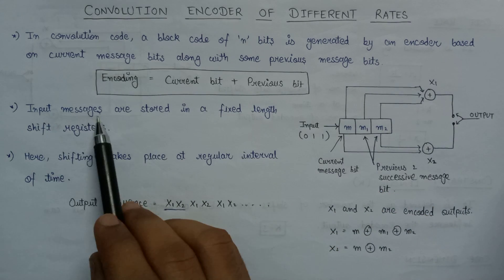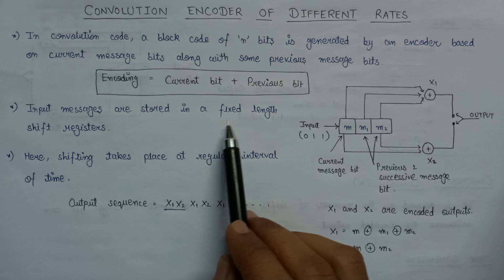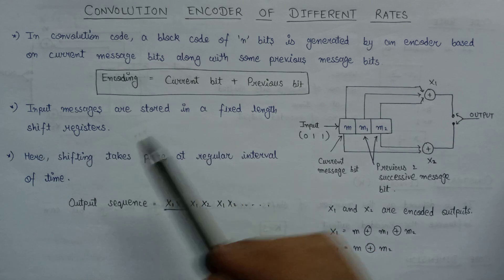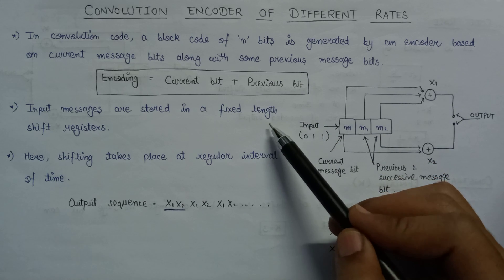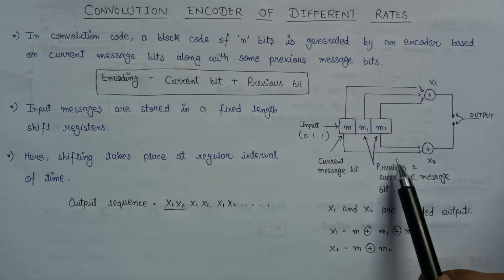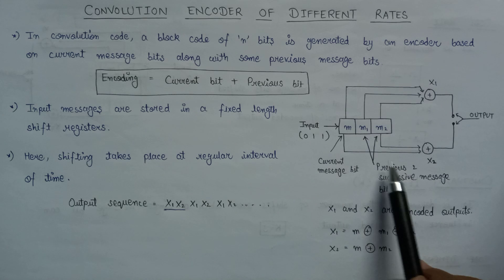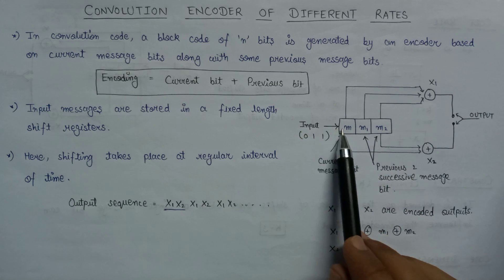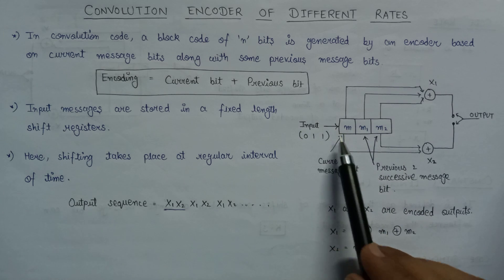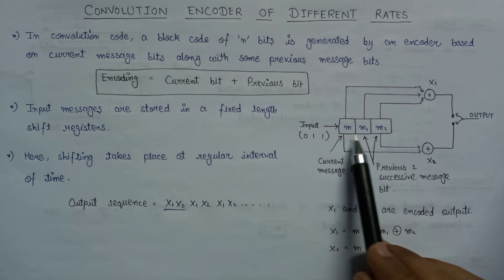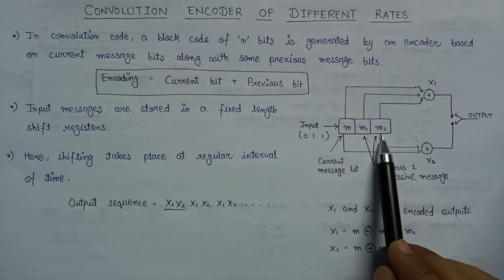The input message is generally stored inside a fixed length shift register. Let's understand these two points by the help of designing an encoder. Here is a convolution encoder that contains the input at this side, and this input is applied to three shift registers that are denoted by M, M1, and M2.